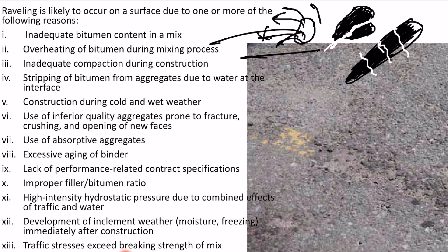Development of inclement weather immediately after construction - such as rain starting right after laying - means the binder did not get time to reach its maximum bonding strength, and moisture ingresses into the mix leading to raveling. Traffic stress exceeding the breaking strength of the mix due to excessive traffic also leads to raveling. More or less, apart from a few points, these causes are the same as stripping, and the reasons discussed for stripping are applicable to all disintegration defects.